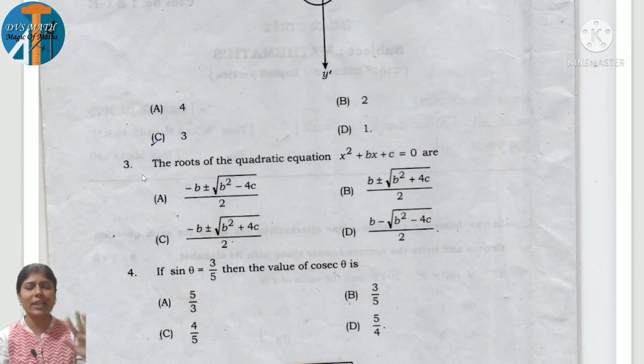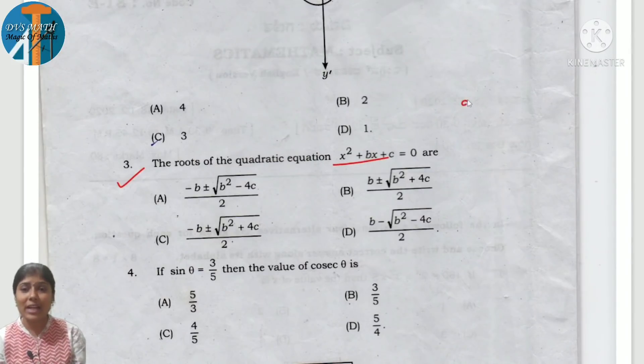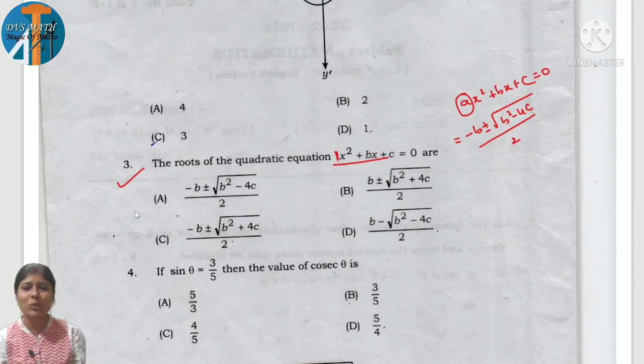The roots of quadratic equation x square plus bx plus c is equal to 0. The formula, you have to find which formula is correct. The option gives the formula. x is equal to minus b plus or minus square root of b square minus 4ac by 2a. But observe, the standard form is ax square plus bx plus c equals 0. Here a is 1, so the formula should be minus b plus or minus square root of b square minus 4c divided by 2. Option B is correct because we have plus, not minus b.